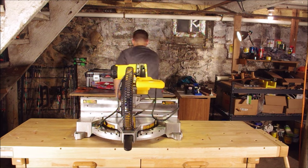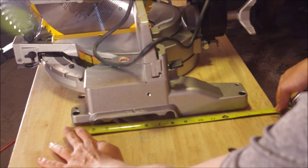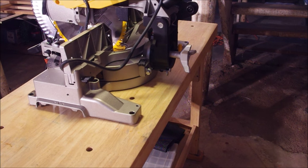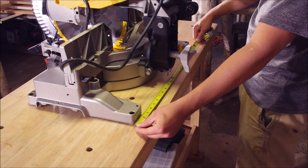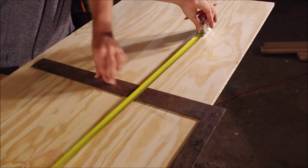First get your miter saw on top of the table so you can measure the living heck out of it. Measure the width and the length. Keep those measurements handy.